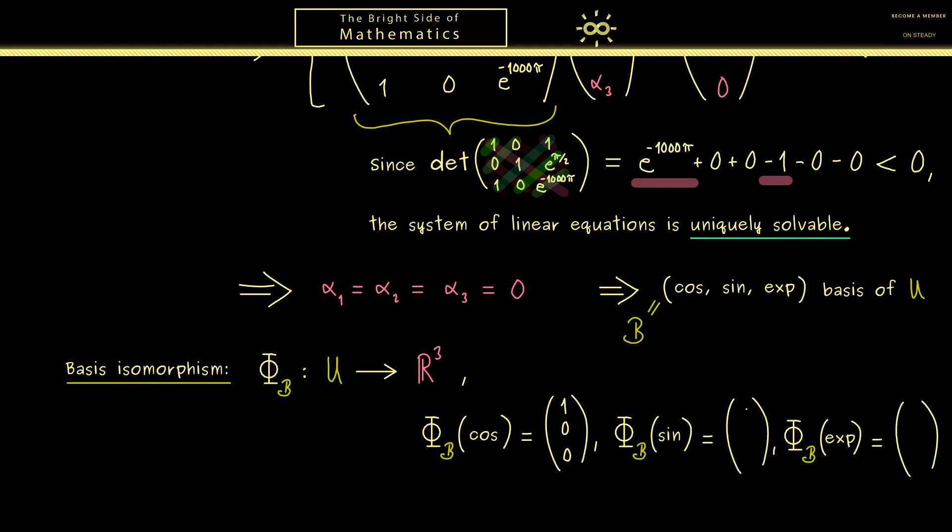This means Φ_B of the cosine function is given as the vector (1, 0, 0), and similarly the sine function gets sent to (0, 1, 0), and the exponential function to (0, 0, 1). So this is exactly what we have learned in the last video: Φ_B is a linear map defined by these three definitions.